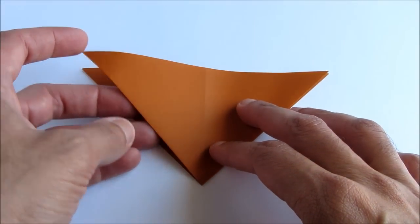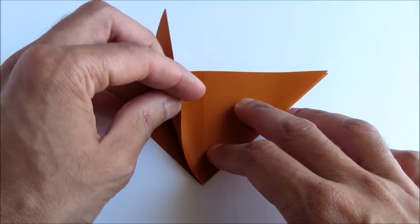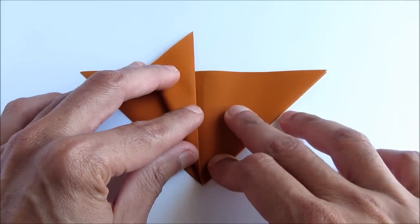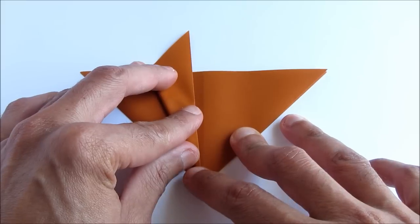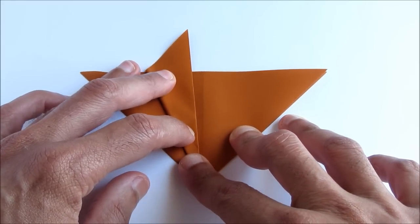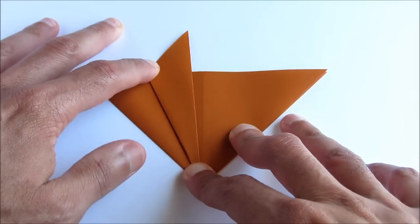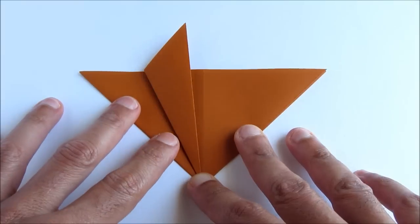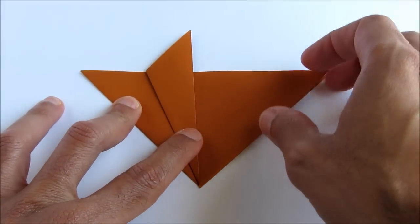Take the left upper flap and fold it almost to the center line as we're showing here. There will be about a half a centimeter gap between the edge and the center line. Now repeat that on the right side.